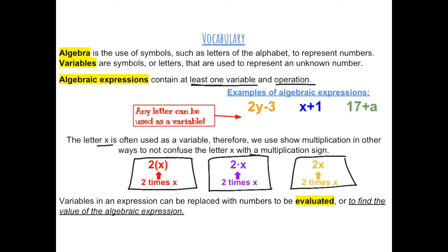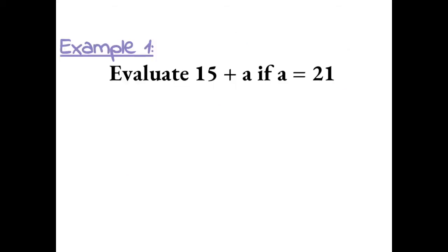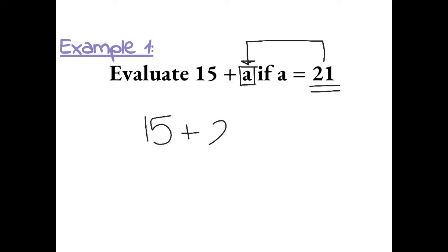Variables in an expression can be replaced with numbers to be evaluated, or to find the value of the expression. Example 1: Evaluate 15 plus a if a equals 21. So, if a equals 21, we can take 21 and put it in place of a. This gives us 15 plus 21, which equals 36.